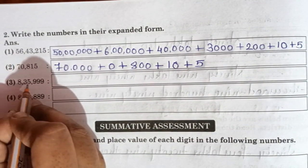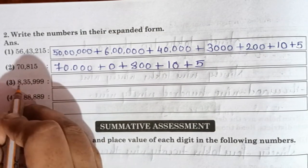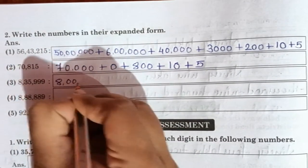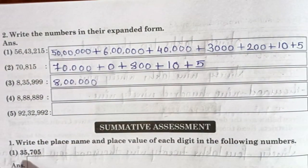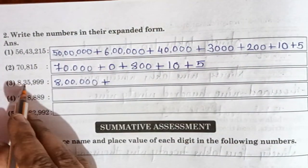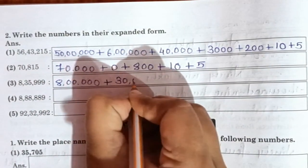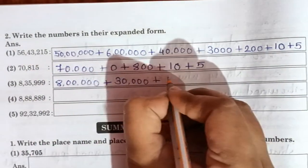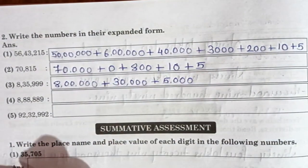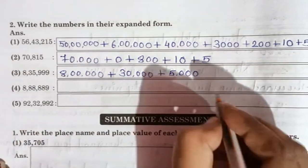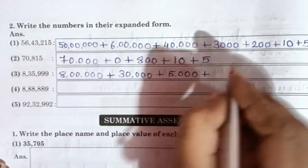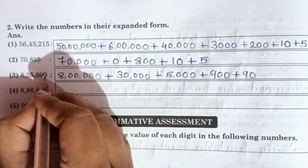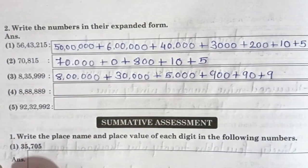Third number is 8,35,999. 8 is at lakhs place: five zeros, so 8,00,000. Plus 3 is at ten-thousands place: four zeros, 30,000. Plus 5 is at thousands place: three zeros, 5,000. Plus 9 is at hundreds place: 900. Plus 9 at tens: 90. Plus 9 at units: 9. Is that clear everybody?